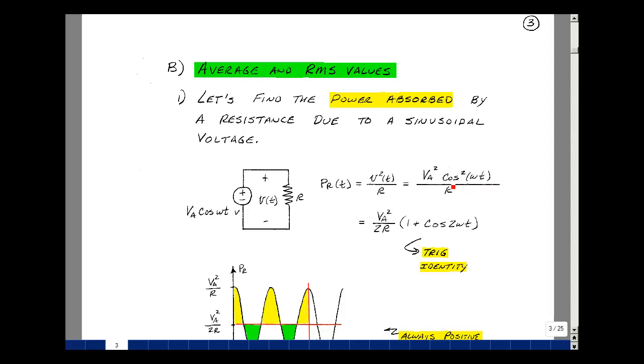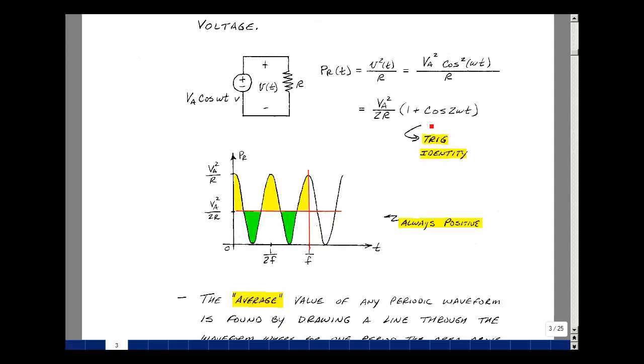In trig, there was an identity, which is an equivalent expression for the cosine squared. And that's equal to 1 half, 1 plus cosine of 2 omega t. In other words, twice the frequency. Let's sketch that versus time. The cosine goes between plus 1 and minus 1. Suppose that the cosine is equal to 1. I get 1 plus 1. That's 2. I'll cancel with that 2, and I'll get v sub a squared over R. And that's this point right over here.